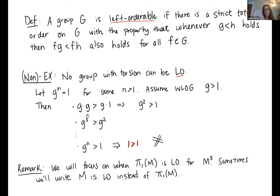If I take this inequality that I already start with and multiply on the left by g, I get the statement that g squared is bigger than g, which I know is bigger than one. I can follow along doing a similar argument, and I end up with the statement that g to the n is bigger than one. Now we're really in trouble. This gives us a contradiction. So whenever a group has torsion, it can't be left orderable.